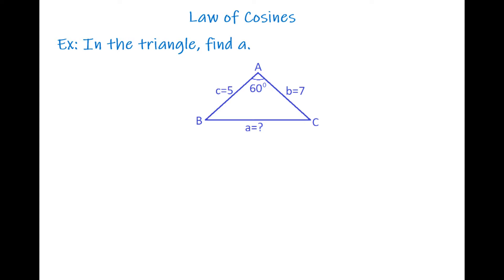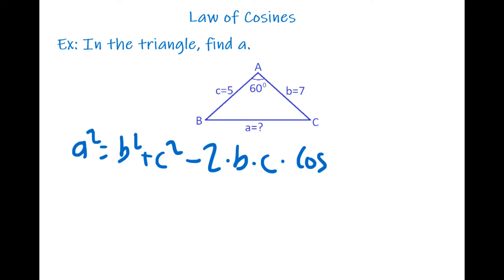Since we need a formula for a, it's going to be: a squared equals b squared plus c squared minus two times b times c times cosine A. We use cosine A because we are looking for side a. From the triangle we have angle A = 60°, c = 5, and b = 7. We plug those values into the formula.